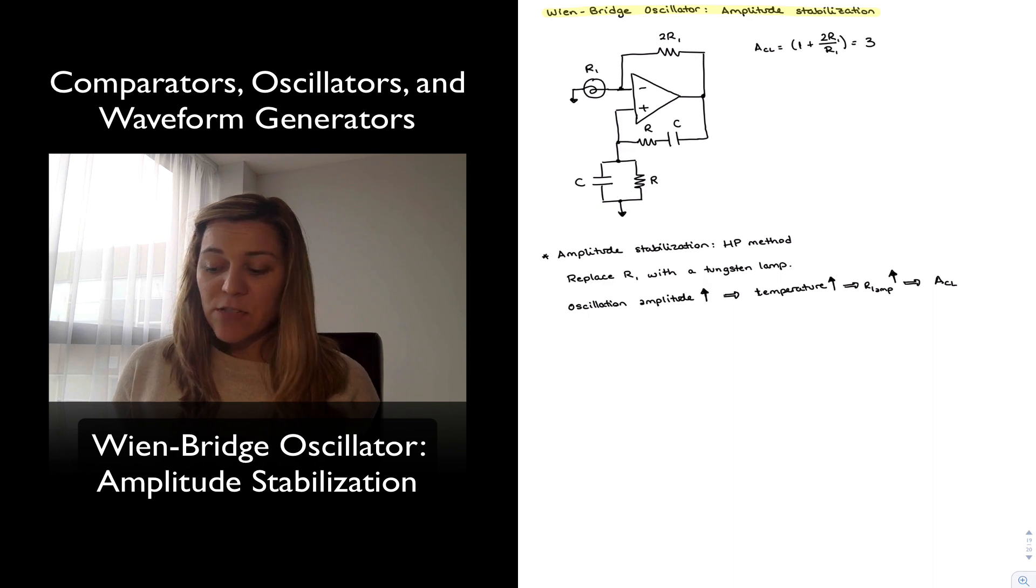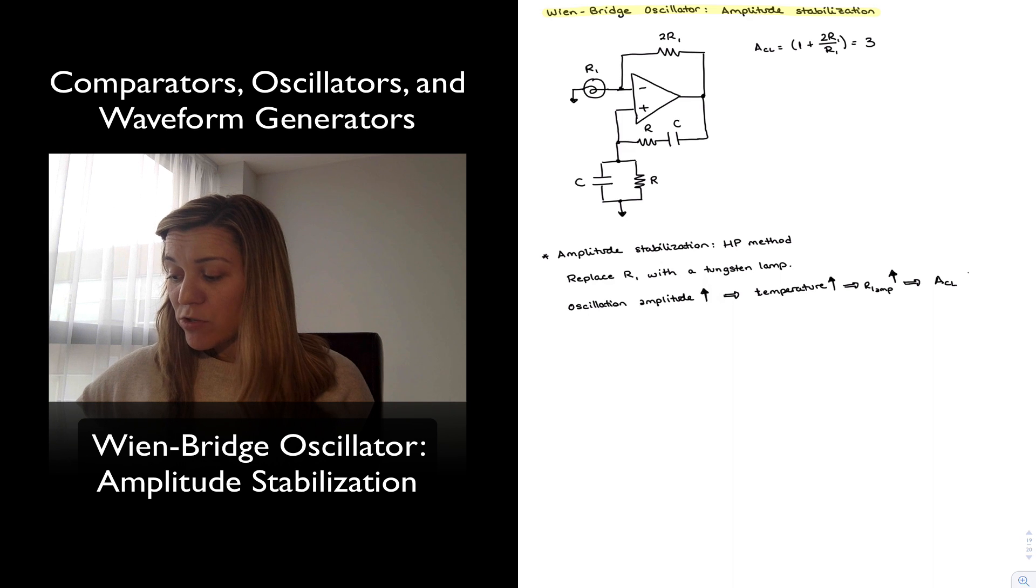the resistance value of the lamp, I'm going to call it R lamp, also goes up. And if my resistance of the lamp goes up, and my feedback resistor remains the same, my overall gain is going to decrease, so my closed loop gain is going to decrease, and so that's how the negative feedback mechanism will work.